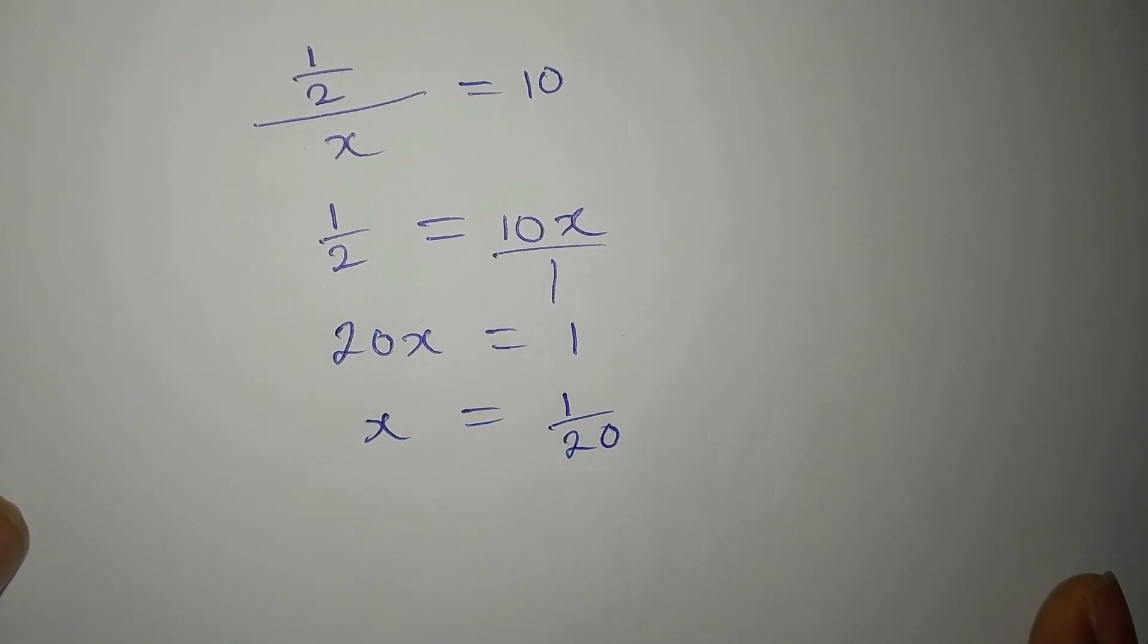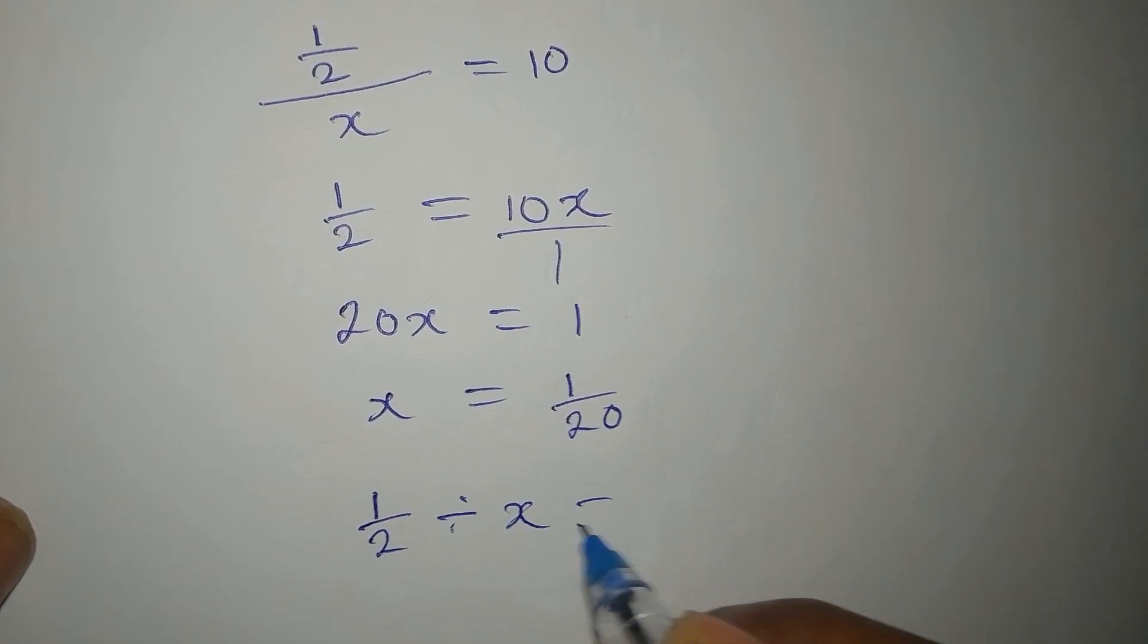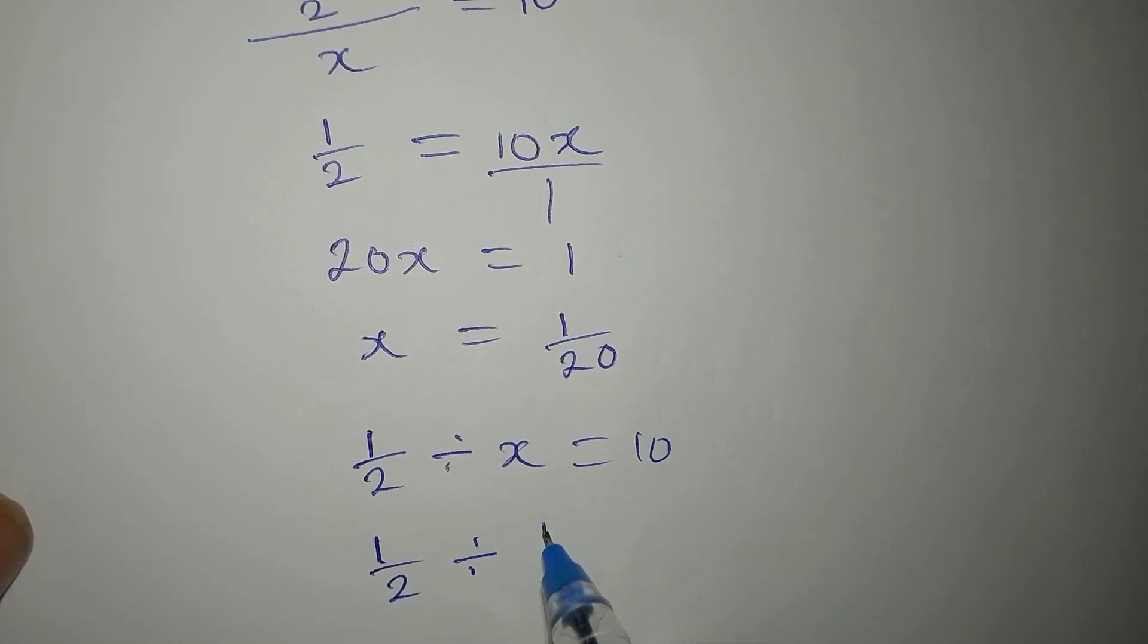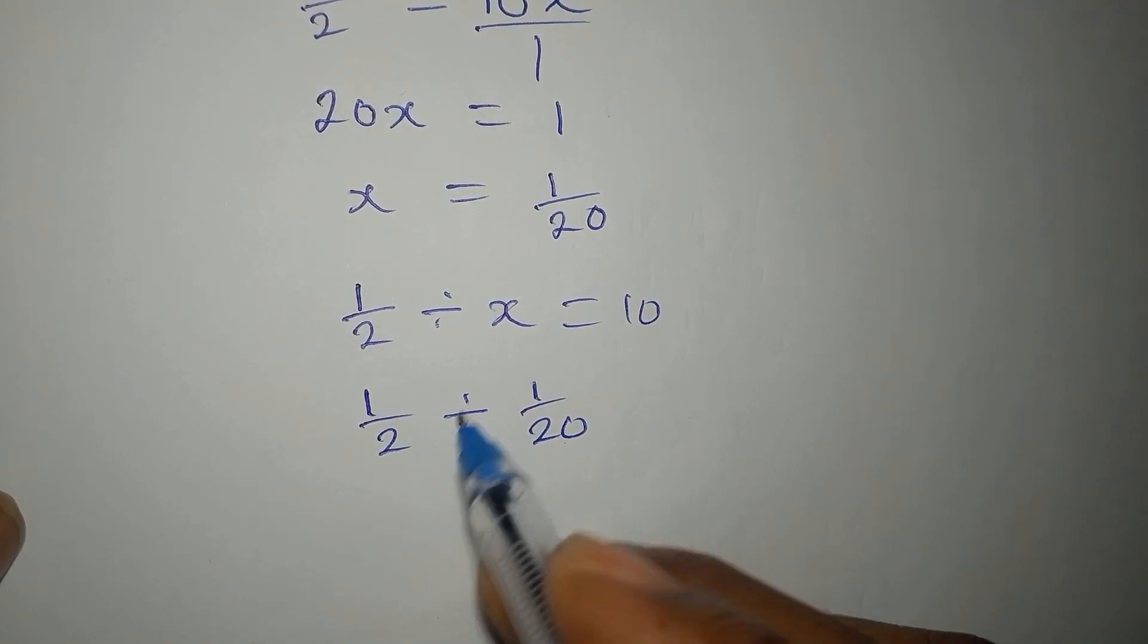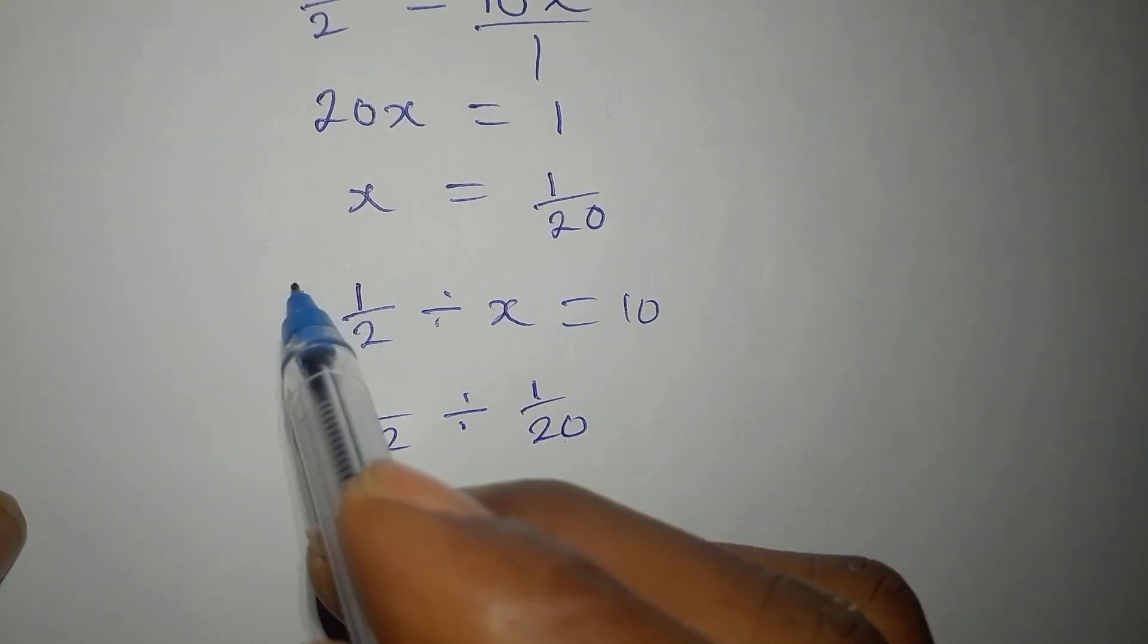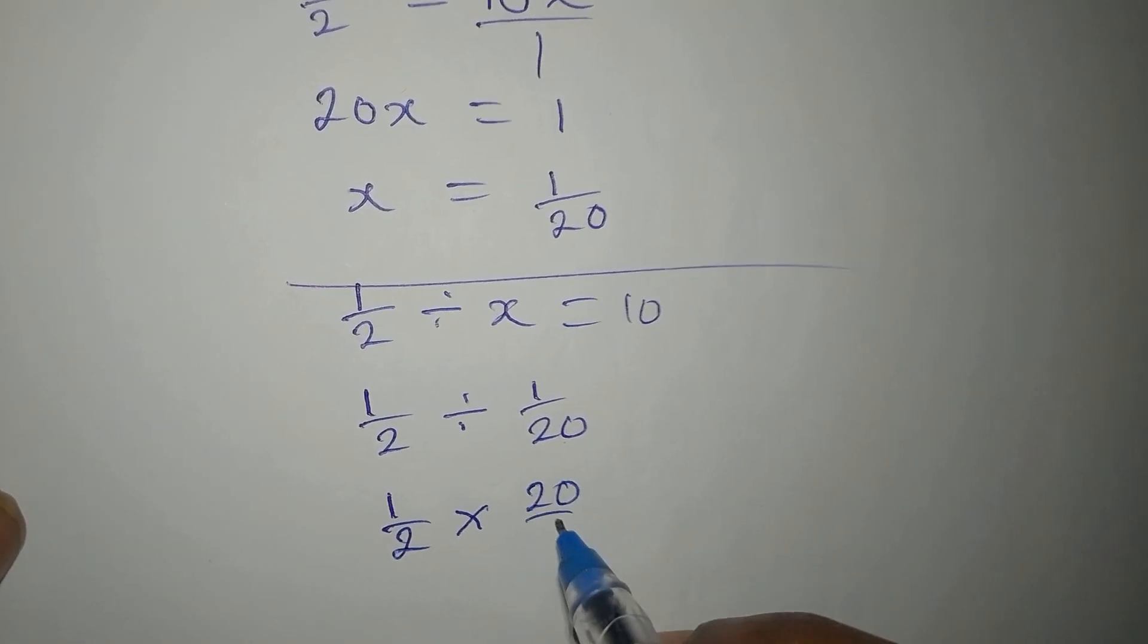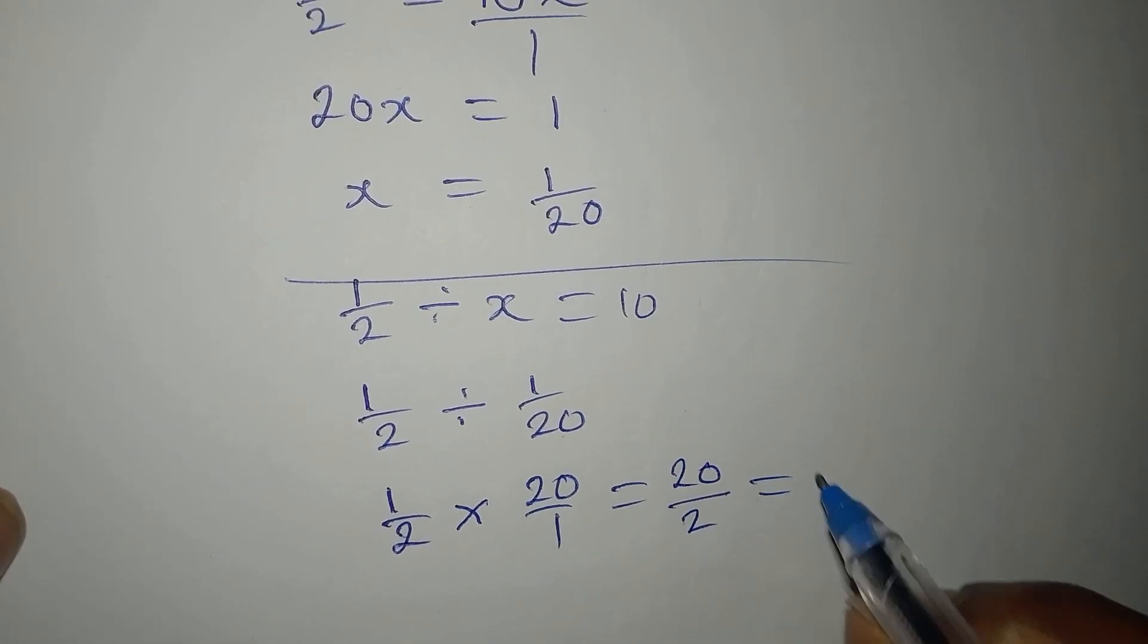Now, let us put this back into the equation where we've got one over two divided by x equals ten. So we'll be having one over two divided by x, which is now one over twenty. Now, what would this give us? We need to turn this to multiplication: one over two times, remember, we are trying to verify, one over two times twenty over one. This is twenty over two and it is ten.